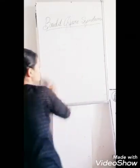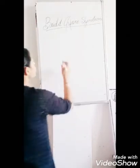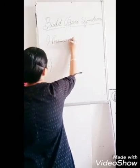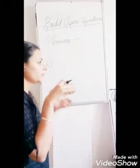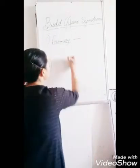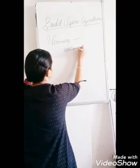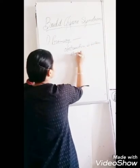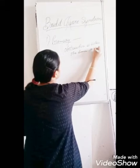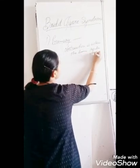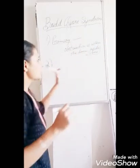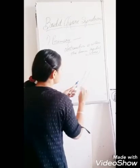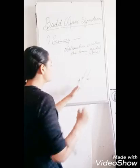Budd-Chiari Syndrome is categorized into primary and secondary. Primary is when the obstruction is within the lumen — specifically within the lumen of the hepatic veins.